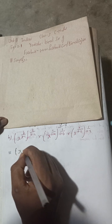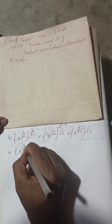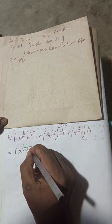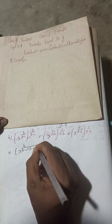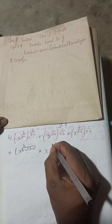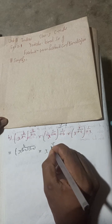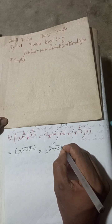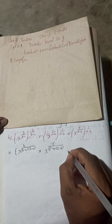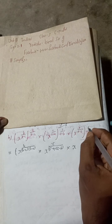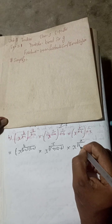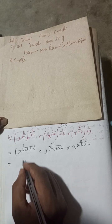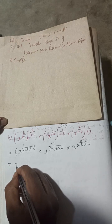We can write x to the power: here B by (B minus C) multiplied by 1 over (B minus A), which gives B in the numerator. Then x to the power C multiplied by 1 over (C minus A) times (C minus B), and then x to the power A multiplied by 1 over (A minus B) times (A minus C).